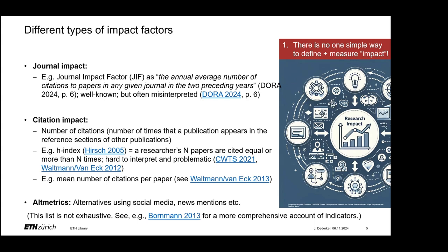Another example could be the mean number of citations per paper, which is a very standardized way of measuring citation impact. A third, quite different or supplementary type of impact factor could be altmetrics — these are basically measures that focus more on the use of social media or news mentions. This list is not exhaustive, of course. There are many more options to operationalize research impact, such as the paper by Bollman in 2013.